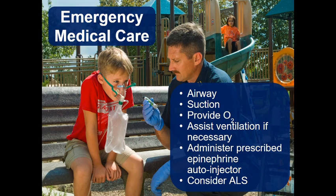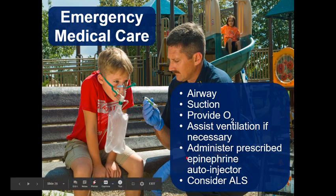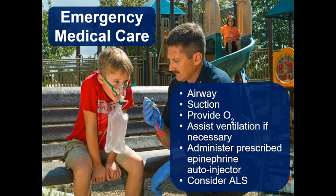Emergency medical care: airway is critical, especially with angioedema in the mouth and throat — you need ALS immediately because an OPA or NPA won't fix swelling; they may need a surgical airway. Provide suction if needed, oxygen if hypoxic, and ventilate if breathing is ineffective. If you hear wheezing, consider albuterol. Administer epinephrine — either as an ampoule or an EpiPen auto-injector. Consider ALS even if there are no immediate airway needs, as they may need steroids or IV epi for severe reactions.